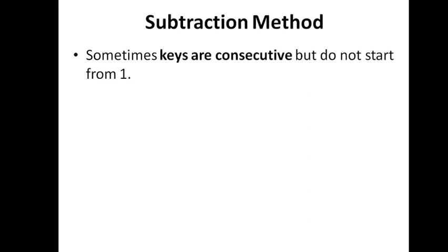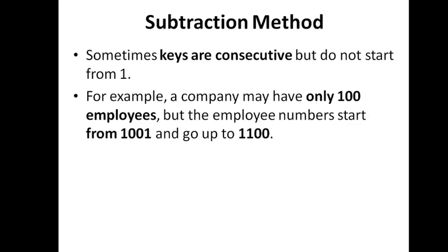The next method is the subtraction method — not really a new hash method but an extension of the direct method with a slight modification. In some situations, keys are not consecutive starting from zero. For example, a company with 100 employees uses employee numbers from 1001 to 1100 instead of 0 to 99. As a result, even though there are only 100 employees, implementing direct method would require a list of 1100 elements.